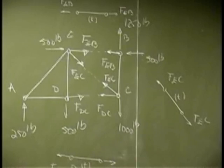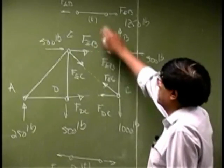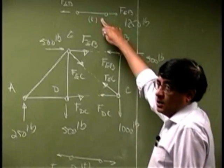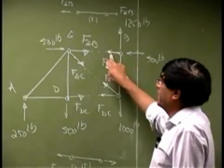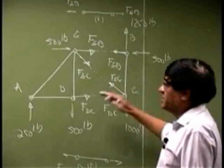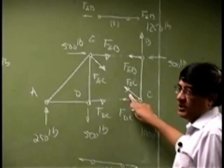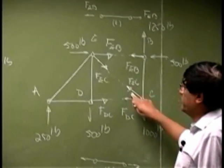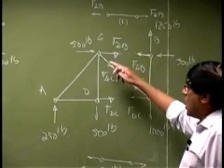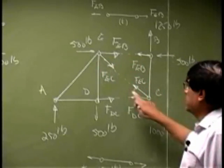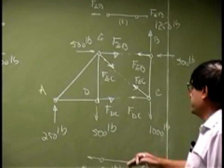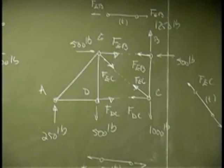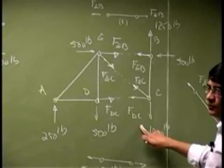So what we did was, we removed the member EB and in place of that, you placed two forces at joints E and B. You did exact same thing for member EC. You removed the member and you account for that by putting a force here and a force here. You did the same thing with DC. You removed that member, assume that to be in tension and then placed these two forces.